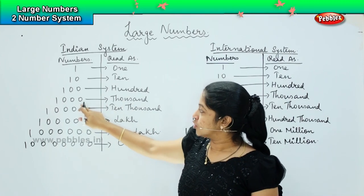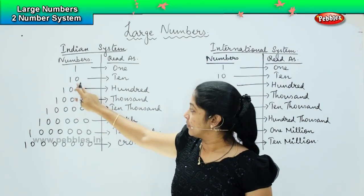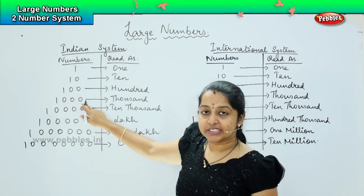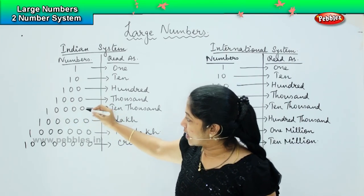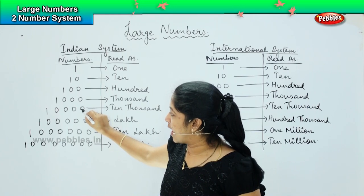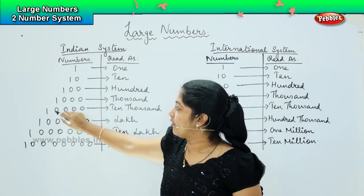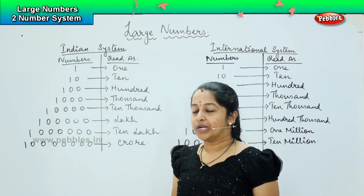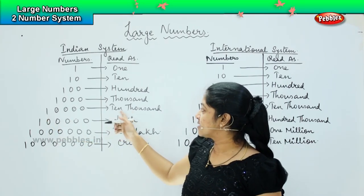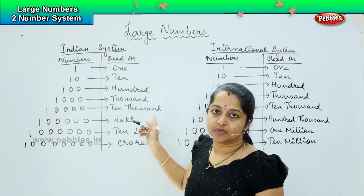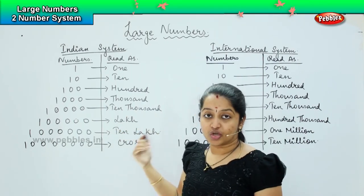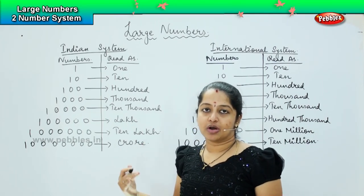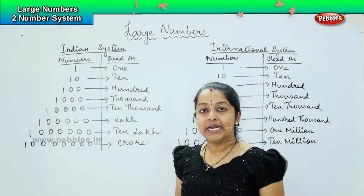Now if I add three 0s behind 1, what does it become? It becomes 1000. First it was a single 0, then double 0, then three 0s. The next one — if I add four 0s behind 1, it becomes 10,000. This is something new we'll be learning in this class, and we will be solving sums based on 10,000 and above values.